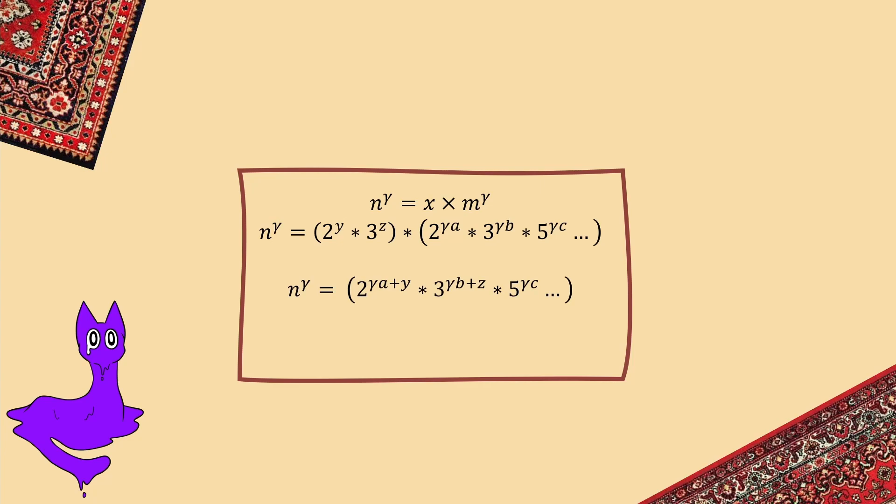When you multiply those in, 2 and 3 are no longer to the power of multiples of gamma, so x does not fulfill this equation. But if we go back and assume that x is a power of gamma, then 2 and 3 will be risen to multiples of gamma, and so when you multiply them in, nothing's a problem. Everything is a multiple of gamma, meaning that x solves the equation.